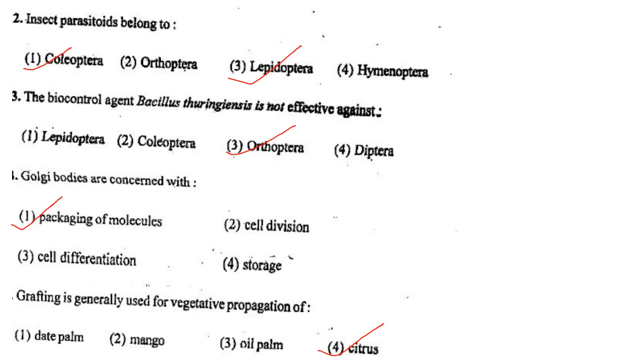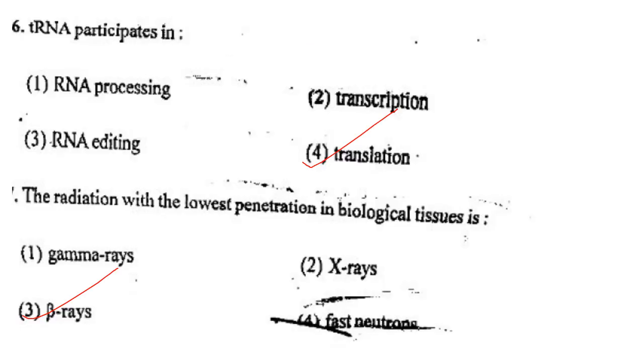Next one: Grafting is generally used for vegetative propagation of option 1, date palm; option 2, mango; option 3, oil palm; option 4, citrus. Answer is option 4: citrus.